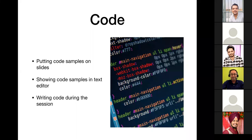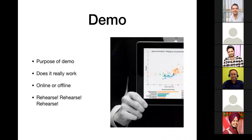Writing code live during a session is the worst idea. People are there to understand what you want to explain about a particular topic — they are not there to see your coding skills or how fast you can type. Don't write code during the session; it's time-wasting. Most of the time, because of stress, the code fails and there are syntactical errors. Unless you're doing a session specifically about writing code faster, have it pre-written and pre-tested, and just show the important aspects.